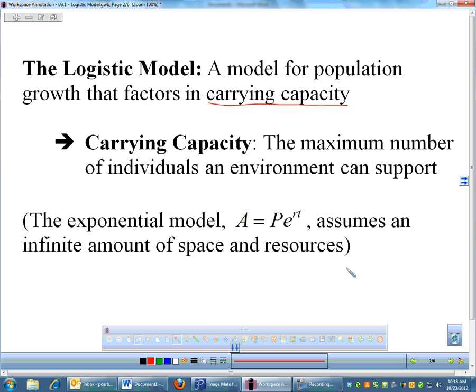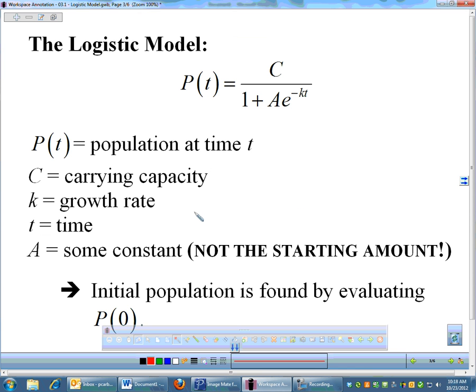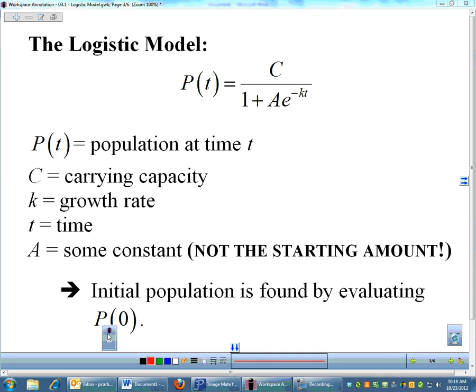That's what makes the logistic model more realistic—it realizes that eventually you're going to run out of some needed resource, and reproduction will tend to decline. It is more realistic, and it is a lot uglier than your exponential model. We will not derive the logistic model. For now, I'm just going to give you the logistic model, and this is what it looks like. Your population at any time T is C over that mess.